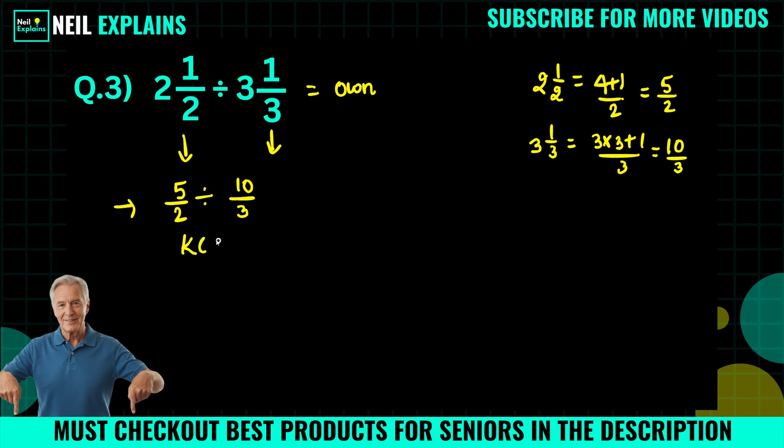KCF stands for keep, change, flip. We have to keep this five by two as it is, and division will be changed to multiplication, and this flip, ten by three will flip to three by ten. So we will write like this: we have to keep five by two as it is, and division will change to multiplication, and we have to flip this ten by three into three by ten.